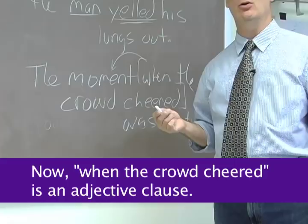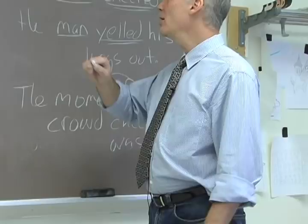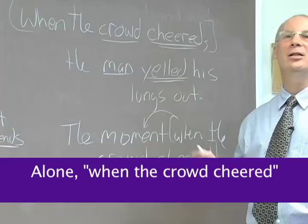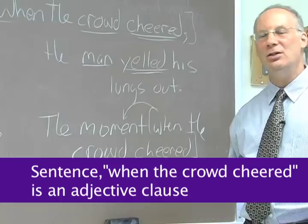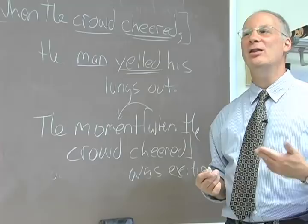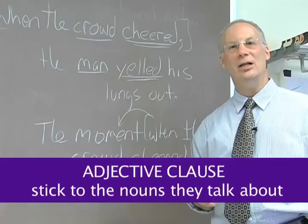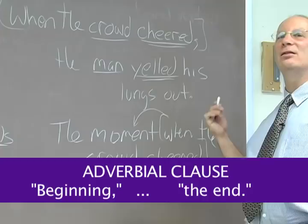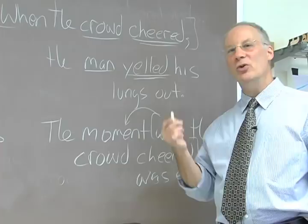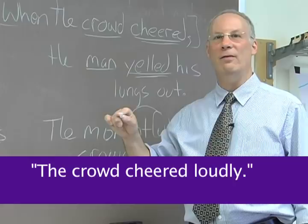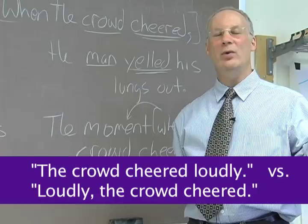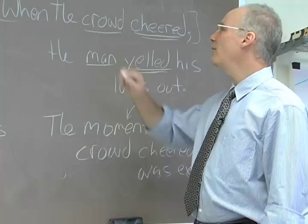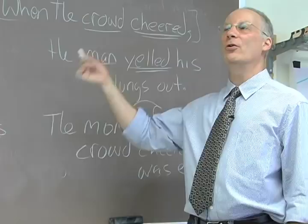It's the same principle we saw when talking about phrases. On the whiteboard, 'when the crowd cheered' without anything after it — all you can tell is that it's a dependent clause. But when you see it in a sentence, it's going to be an adjective clause, an adverbial clause, or a noun clause. We call things by what they do in a sentence. Adjective clauses will stick to the nouns they talk about. Adverbial clauses are much more flexible: at the beginning of the sentence they take a comma; at the end they don't. That's the same basic principle from our first segment — when 'loudly' was at the beginning we needed a comma; at the end we didn't. The same rule applies to adverbial clauses and more complicated structures.